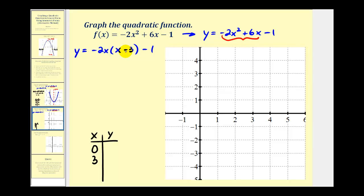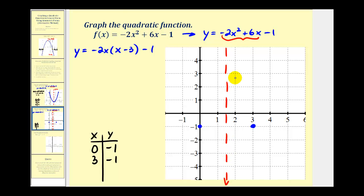Now we'll find the corresponding y-values. When x = 0, the product is zero, so y = 0 - 1 = -1. When x = 3, the product is zero again, so y = 0 - 1 = -1. These two y-coordinates should always be the same if we select the correct x-values. We plot (0, -1) and (3, -1). The axis of symmetry is the vertical line halfway between these two points, which is x = 1.5, or x = 3/2. This also tells us the x-coordinate of the vertex is 3/2.